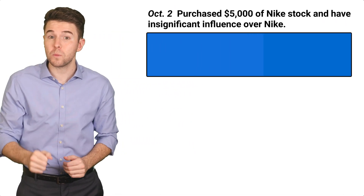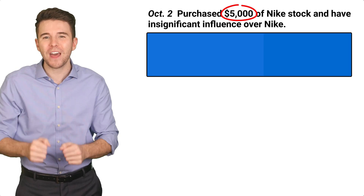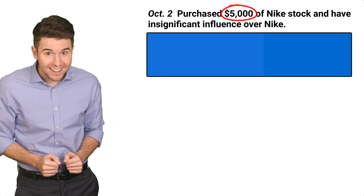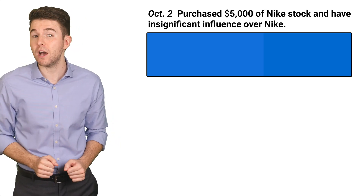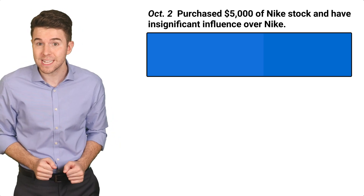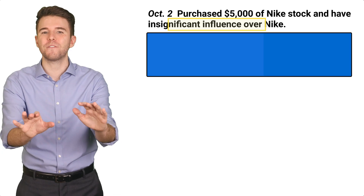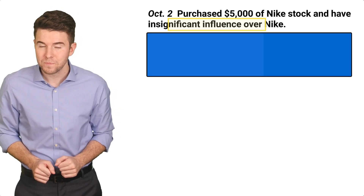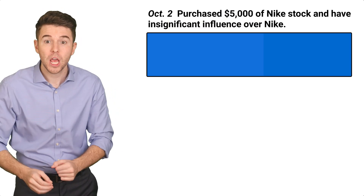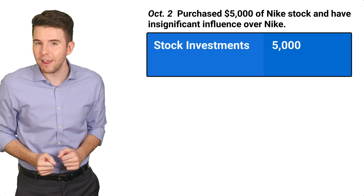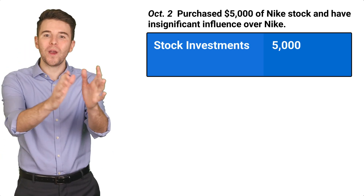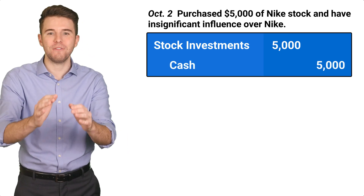Let me show you how to account for this type of investment. Assume on October 2nd, we purchased $5,000 of Nike stock. After this purchase, we own less than 20% of Nike's voting stock and have insignificant influence over Nike. To account for this purchase, we debit stock investments for $5,000 and credit cash for $5,000.